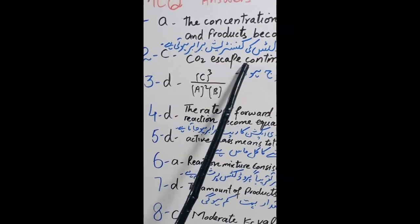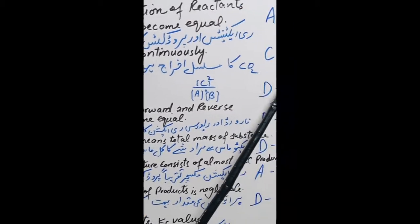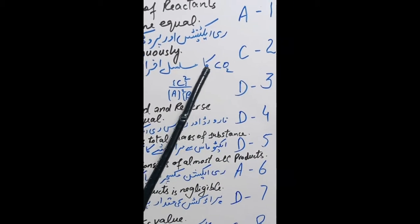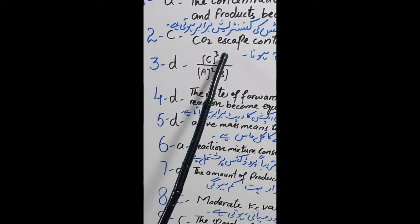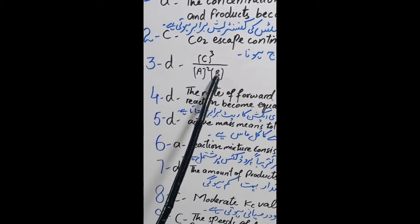Question 2: C. CO2 escape continuously. Answer C. CO2 ka musalsal ikhraaj hona. Question 3: D. C3 over A square into B. Answer D.